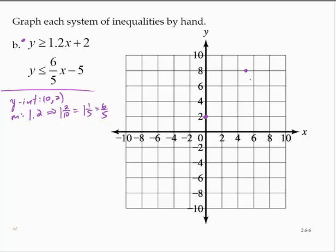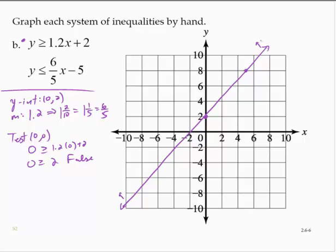Since it's an or equal to, I will draw a solid line through these points. If I were to test 0, 0, that would give me 0 is greater than or equal to 1.2 times 0 plus 2, which is 0 is greater than or equal to 2. That's false. So if this were on its own, I would be shading above the purple line.